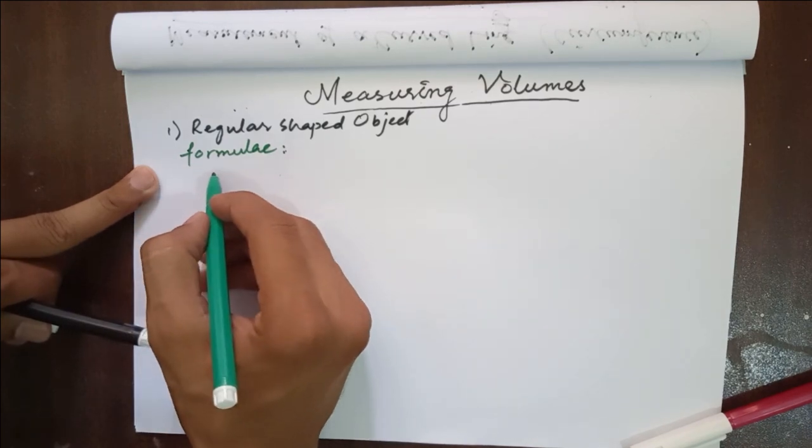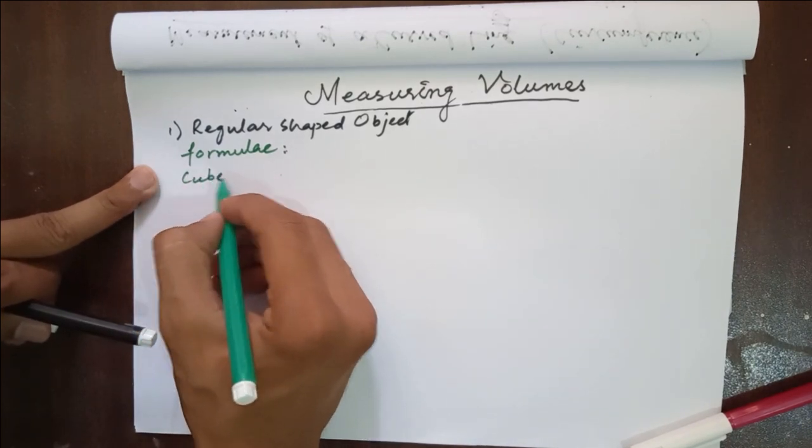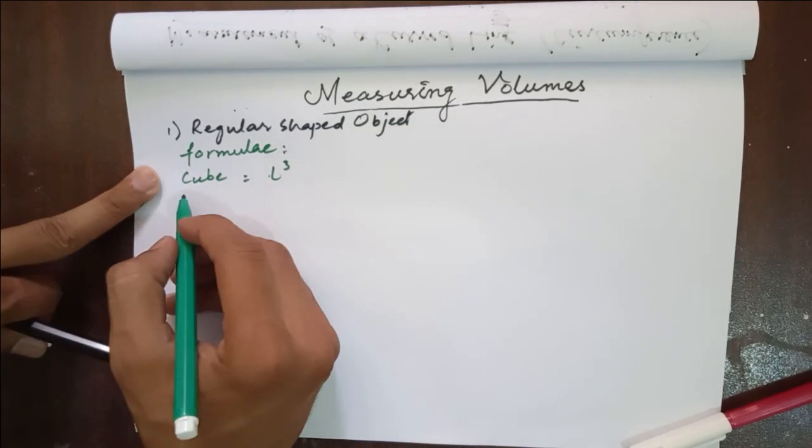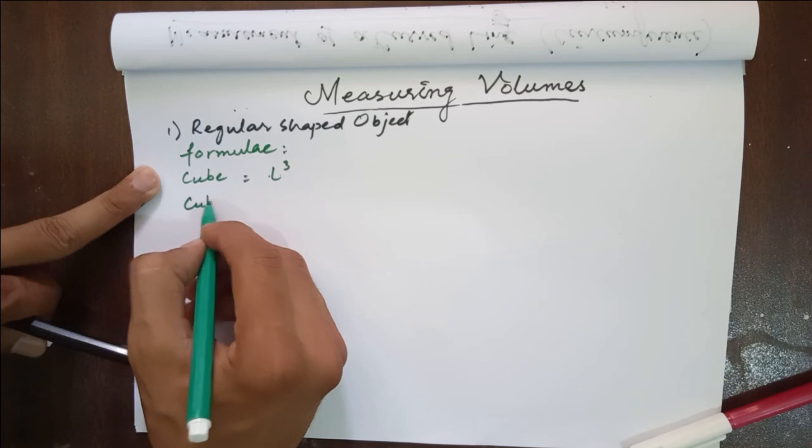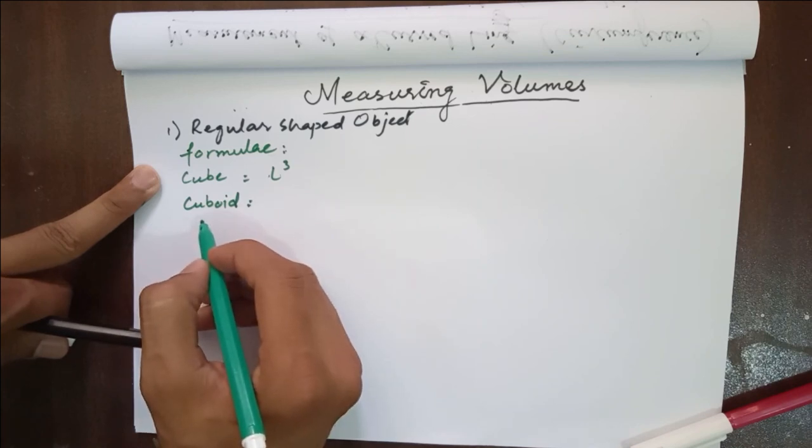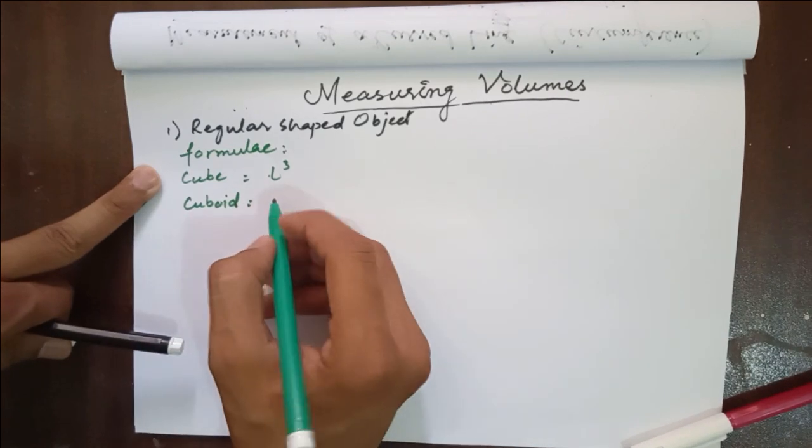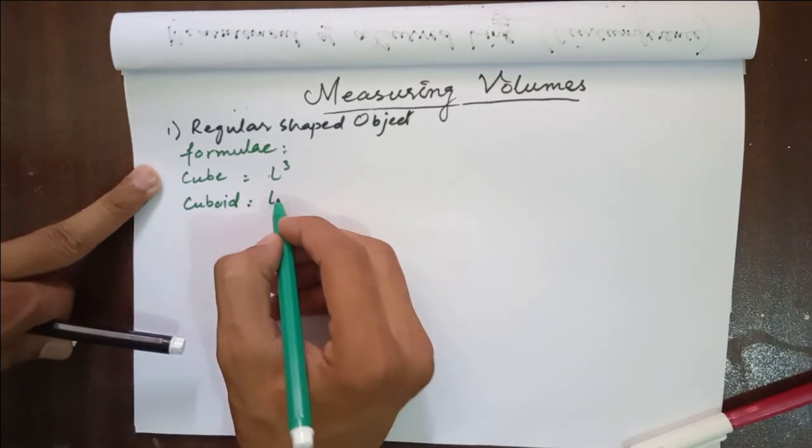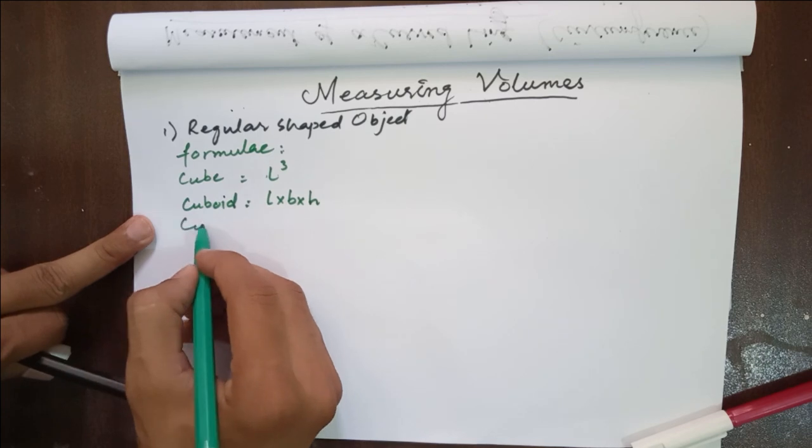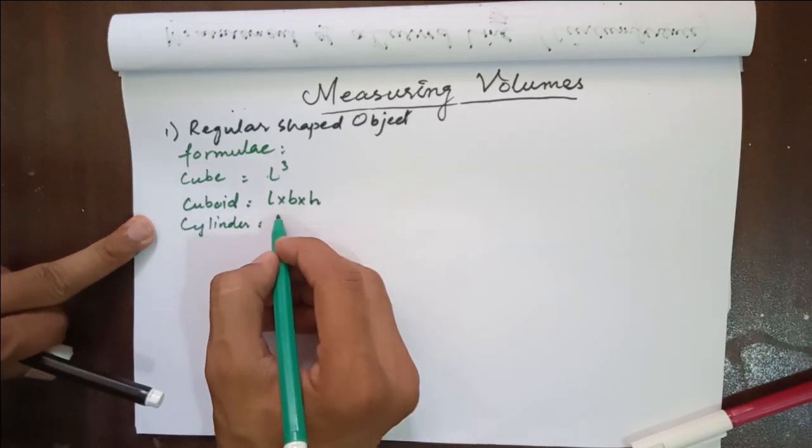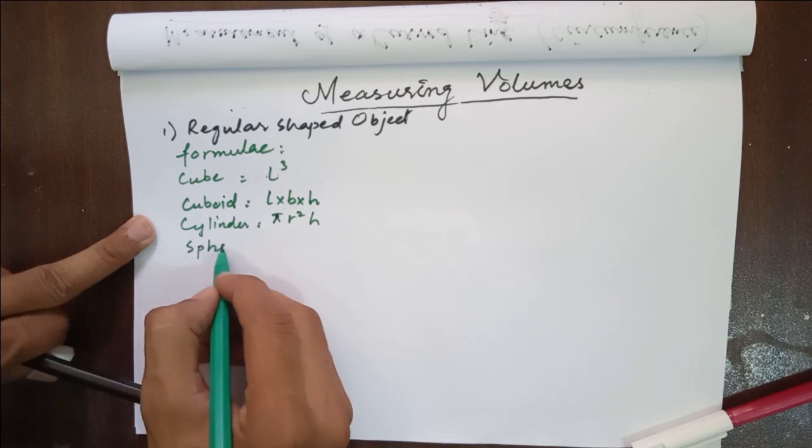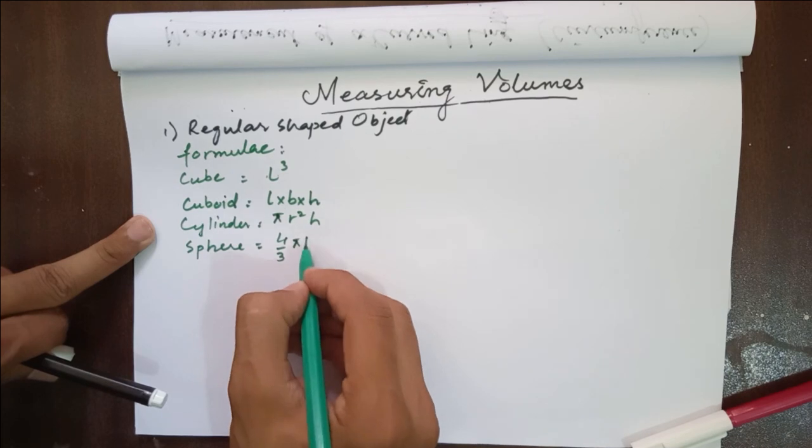For example, if we have a cube, then the formula that we use to measure volume is L cubed, where L is the length of each side. Next is cuboid, in which length, breadth and height are multiplied to obtain the volume. Similarly, the formula for cylinder is pi r squared h, and for sphere it is 4 upon 3 pi r cubed.